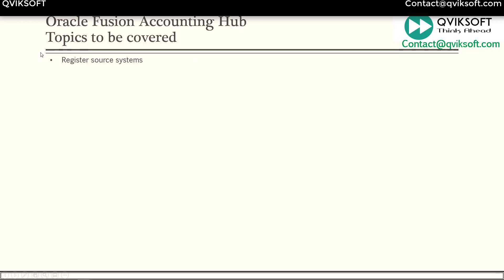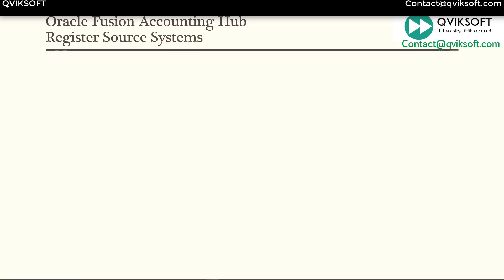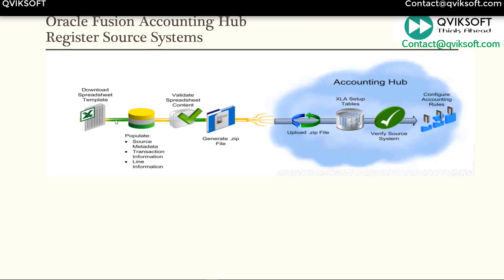These are the topics we're going to cover as part of accounting hub implementation, starting with registering source systems. To register a source system, we download a spreadsheet template from the system, available as part of rapid implementation. We populate source metadata, line information, and header information, then validate the content. After validation we generate a zip file, upload it, and the system loads everything into XLA tables so accounting rules can be configured based on the registered source system.